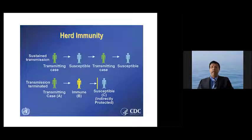So if we look at this figure, sustained transmission is there if the transmitting case passes it on to the susceptible, and the susceptible to another transmitting case, and then to susceptible. But when there is herd immunity, the immune person comes in the middle, transmitting case cannot transmit the disease to the immune person, and therefore the susceptible person is indirectly protected down the line.